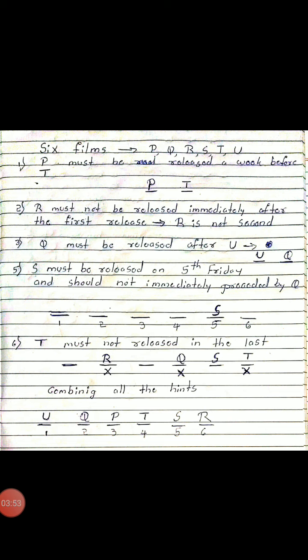Evaluating the possible positions: P and T are on weeks 1 and 2, or 3 and 4, or other combinations. Since S is on week 5 and Q cannot immediately precede S, and T cannot be last, the final order resolves to P on week 3 and T on week 4, with U and Q on weeks 3 and 4 respectively — ultimately P is 2nd week and T follows.